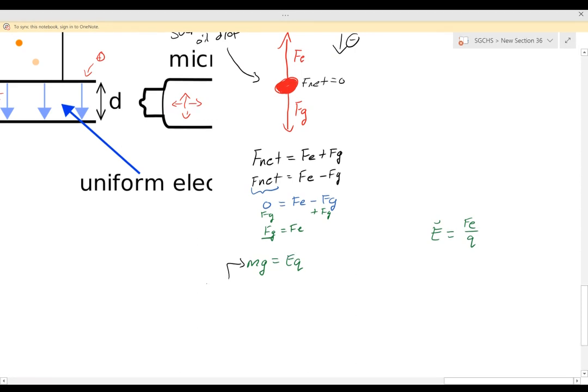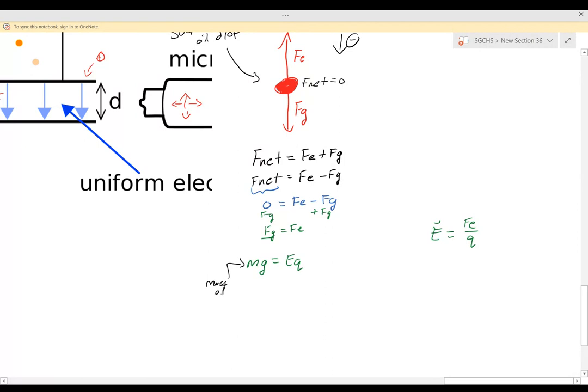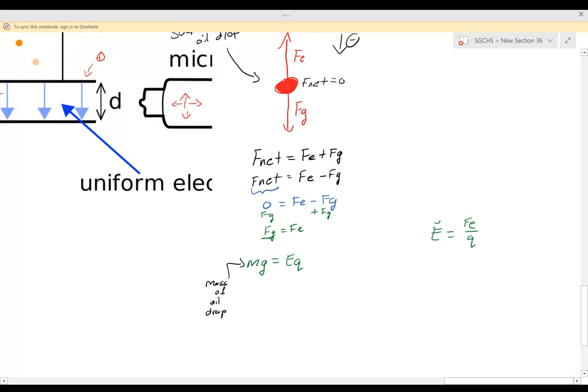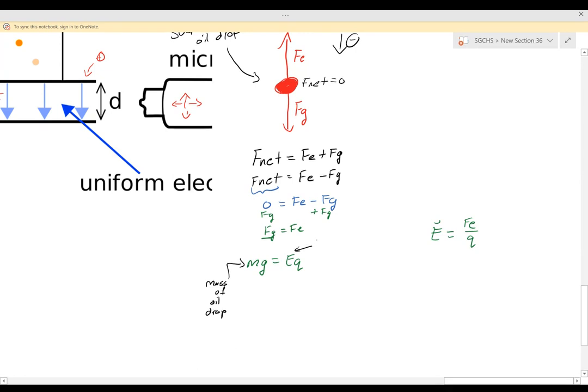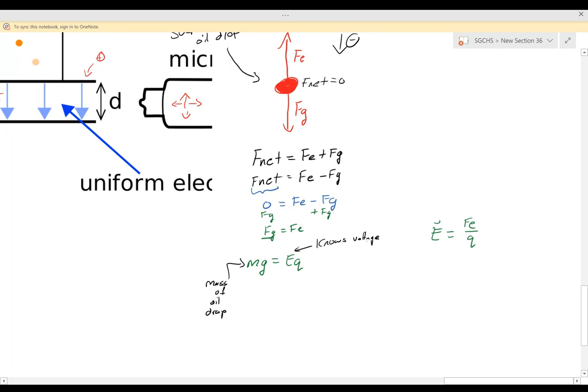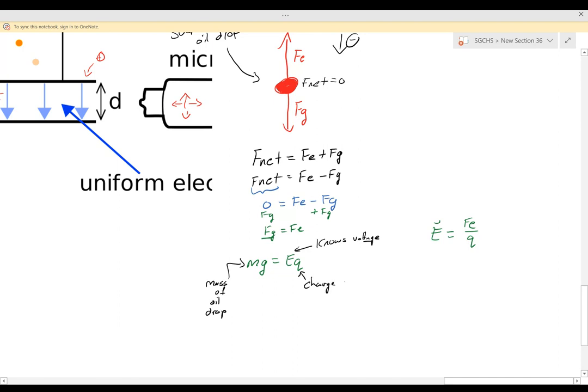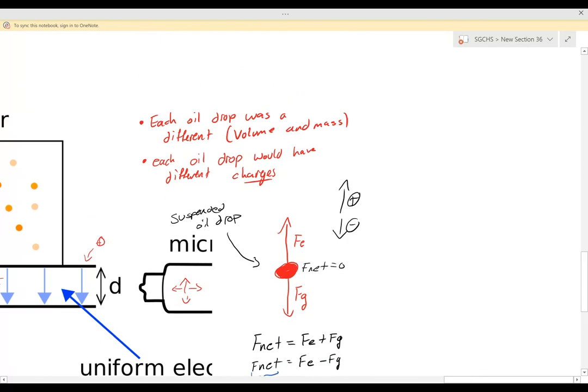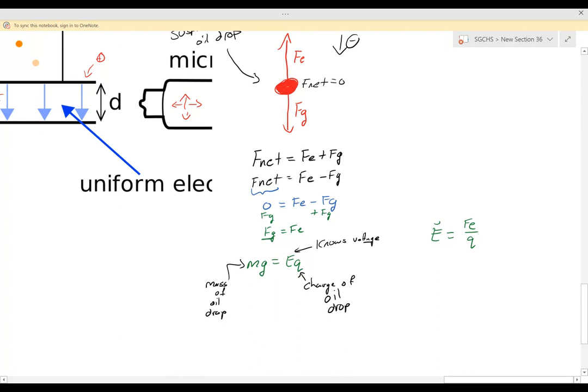This mass is the mass of the oil drop. This electric field, he determines, he has control over the voltage, so he can figure that out fairly easily because he knows voltage. And then Q, Q is the charge of the oil drop. And it's important to remember, each oil drop would have different charges. So our mass of the oil drops would be different and the charges of the oil drops would be different.